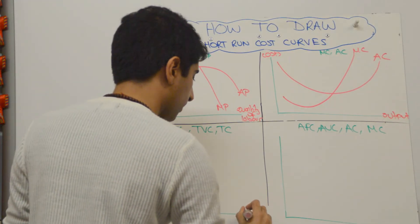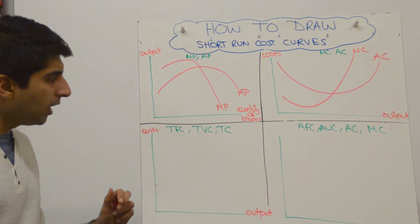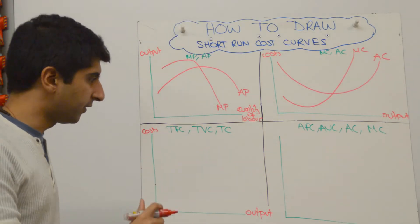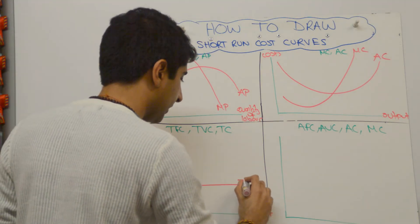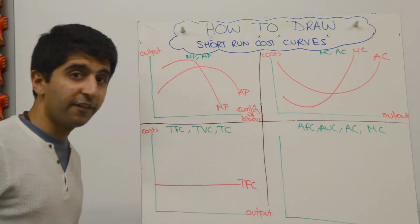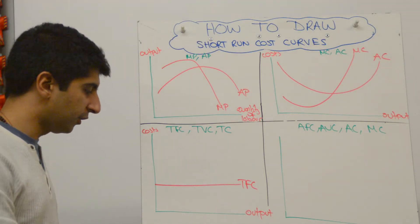All right, total fixed cost curve is very, very simple. That one is just going to look like that. We can label that our total fixed cost curve. Our total variable cost curve is going to look like this—okay, so that's total variable cost curve.